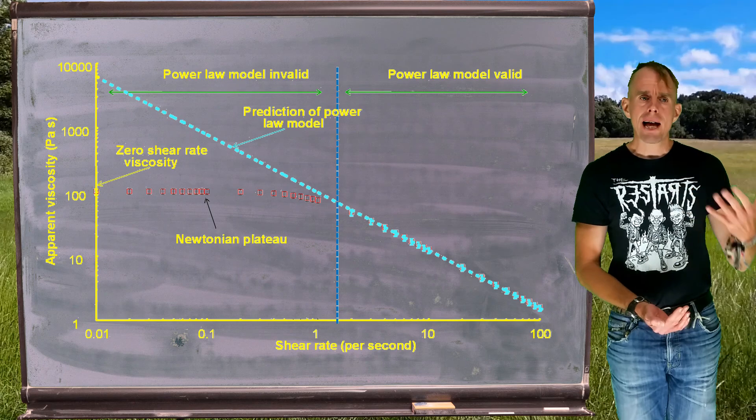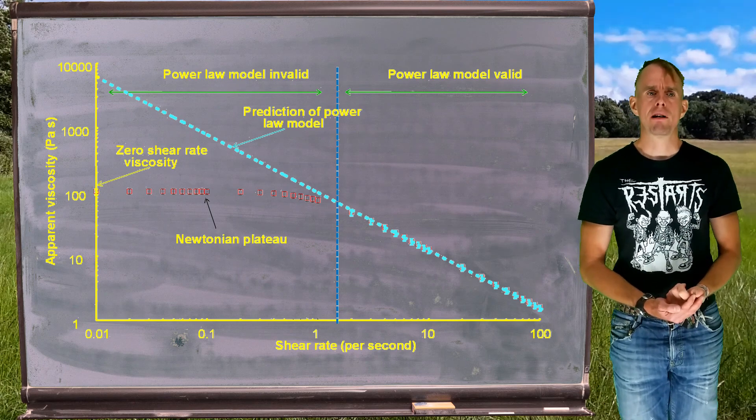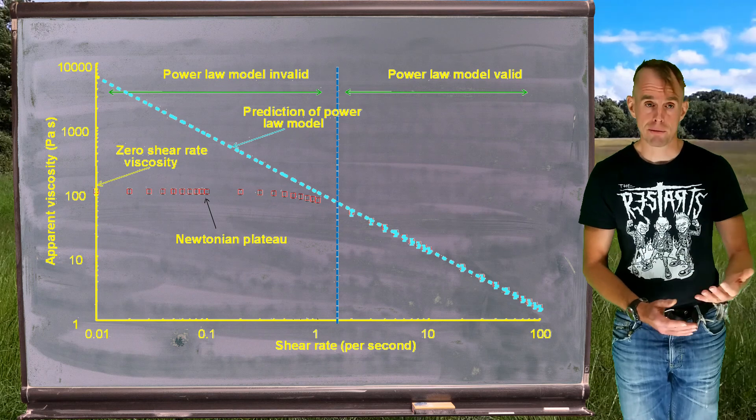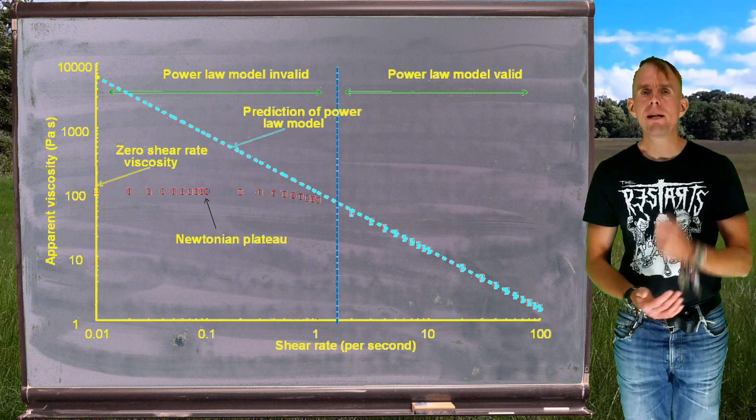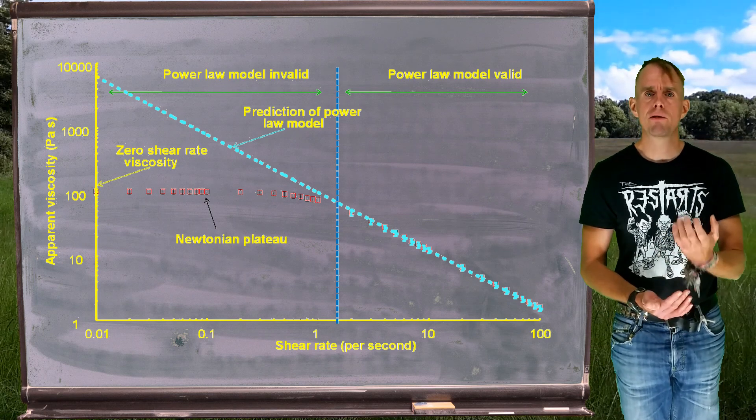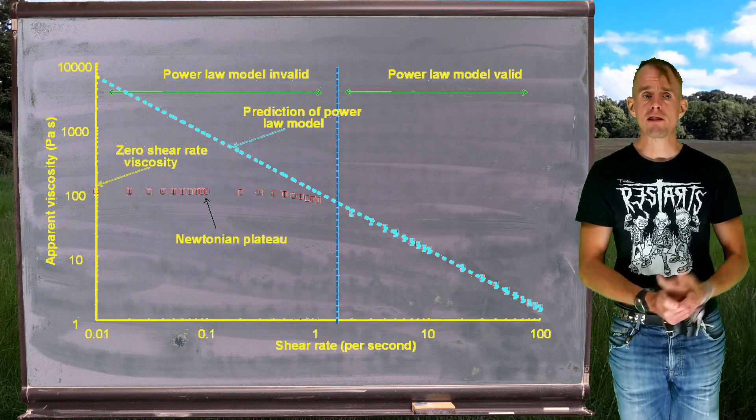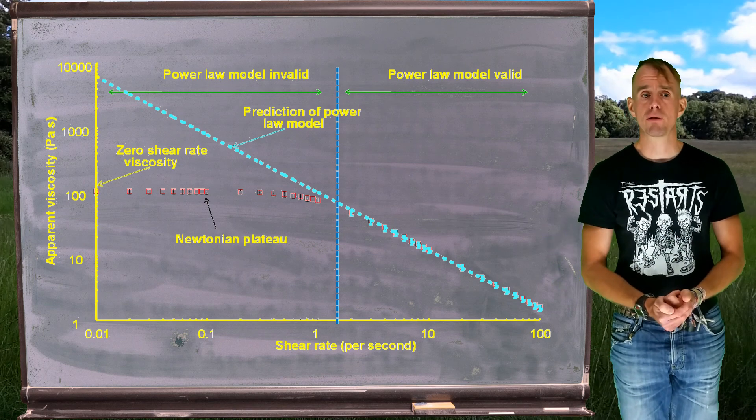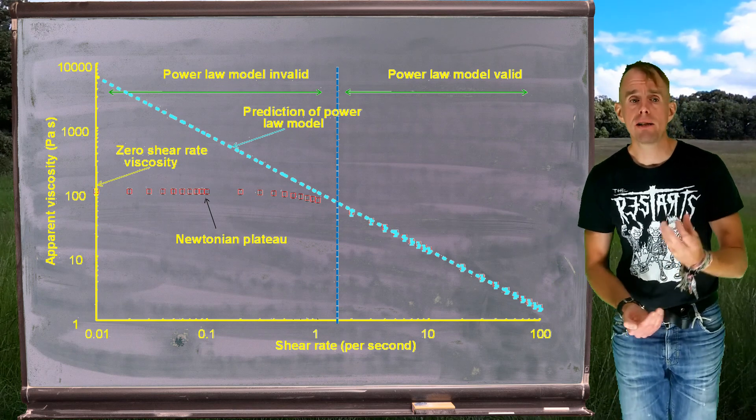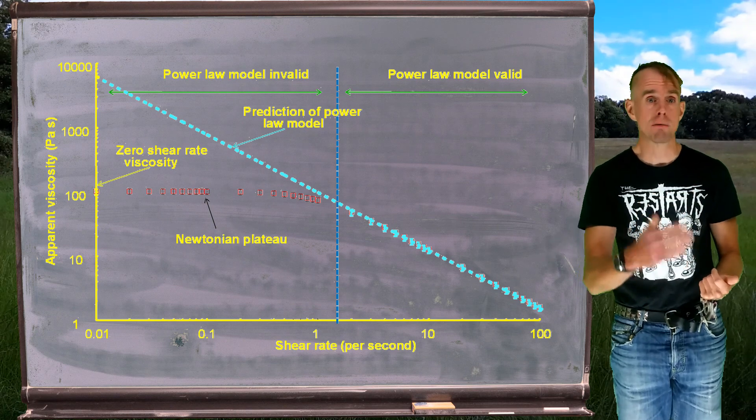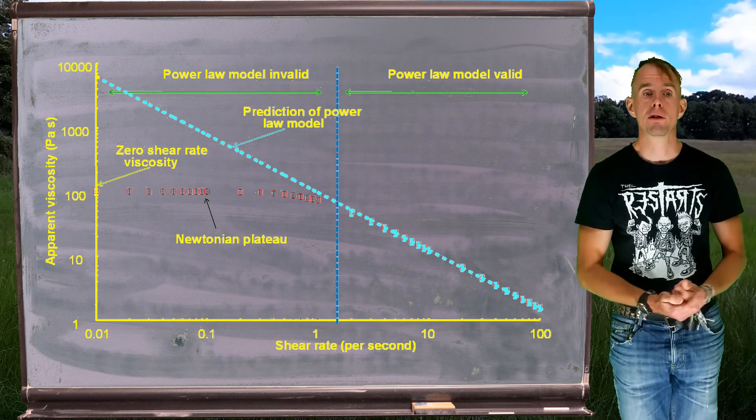The conversation we had around this when we first saw this graph was, look, try and keep things as simple as you can keep them, but no simpler. What we mean by that is, if you've got a piece of machinery that processes a fluid, and the processing shear rate is always above about two reciprocal second, we can perfectly use the power law fluid, so long as we've fitted it to that shear thinning region, which is what we've done in the plot on the board.